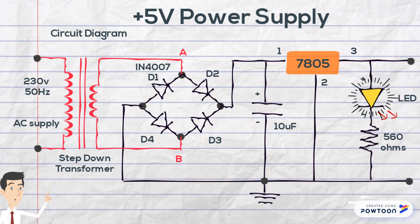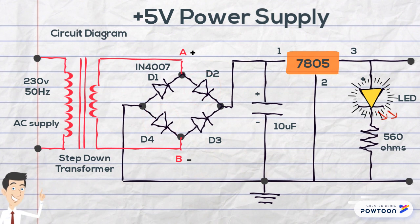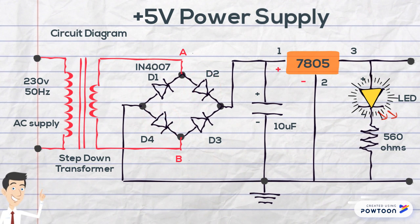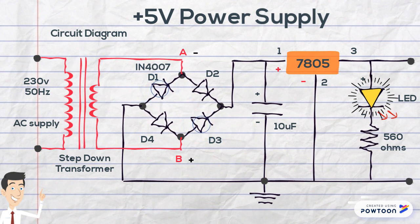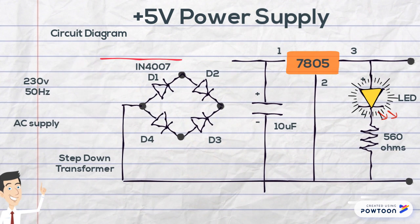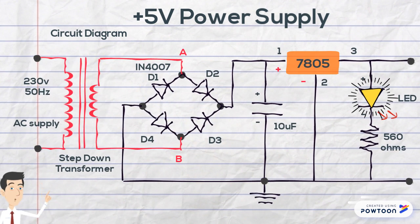Figure shows the circuit diagram. During the positive half cycle of the AC input, terminal A becomes positive and B becomes negative, thereby forward biasing diode D2 and D4 and creating supply on pin number 1 and 2 of the regulator IC. During the negative half cycle, A becomes negative and B becomes positive, thereby forward biasing diode D1 and D3, creating supply on pin number 1 and 2 of the regulator. The unregulated DC output consists of AC ripples.